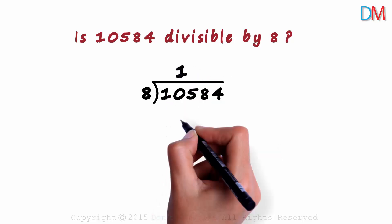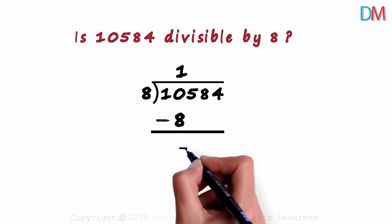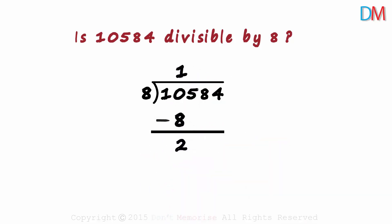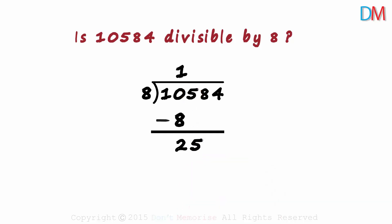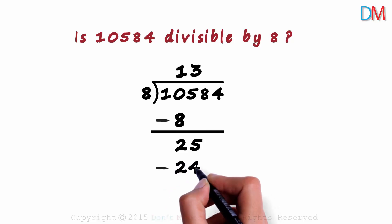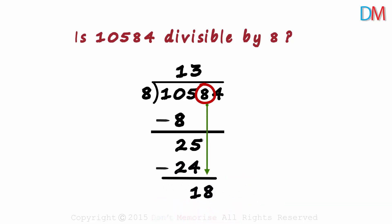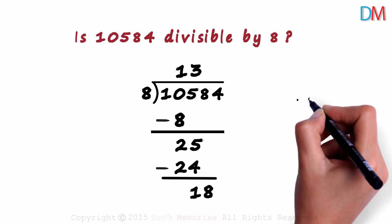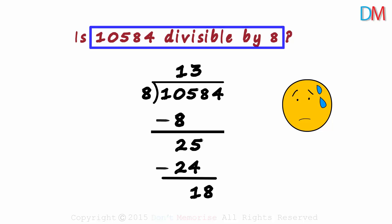8 multiplied by 1 is 8. We subtract 8 from 10 to get 2, then we get the next digit down, 5. 8 multiplied by 3 is 24. We subtract to get a 1 here, we get 8 down. Too boring! We are taking too long to find out if this number is divisible by 8.